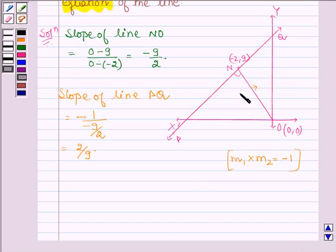And here the slope of this line is -9/2. So slope of line P2 will be given by -1 upon the slope of line NO. So this comes out equal to 2/9.